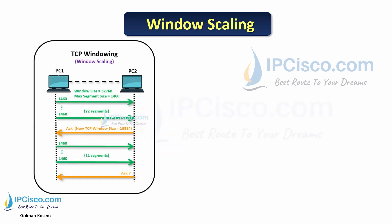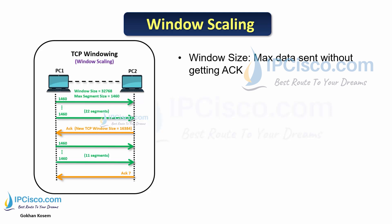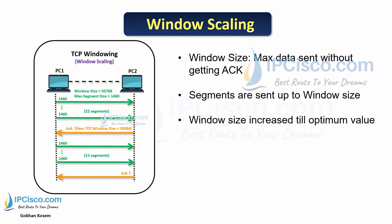Another TCP mechanism is window scaling, or TCP windowing. With window scaling, TCP determines the data rate. For example, the sender sends data with a window size of 32,768. The maximum segment size is 1,460, so the sender sends 22 segments before receiving any ACK. After the receiver gets this data, it decreases the window size and sends an ACK with a new window size of 16,384. The sender then sends 11 segments — totaling 16,384 window size. This is basically how TCP window scaling works, determining the optimum size.